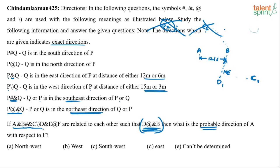Continuing with case 1: next is D ampersand E. Ampersand means E is in the east direction of D. E can come before C or after C — both are possible — so we mark E1 and E2. Finally, at-rate F means F is in the north direction of E. So F is north of E: F1 is north of E1, and F2 is north of E2. The exact vertical distance between E and F is not known.